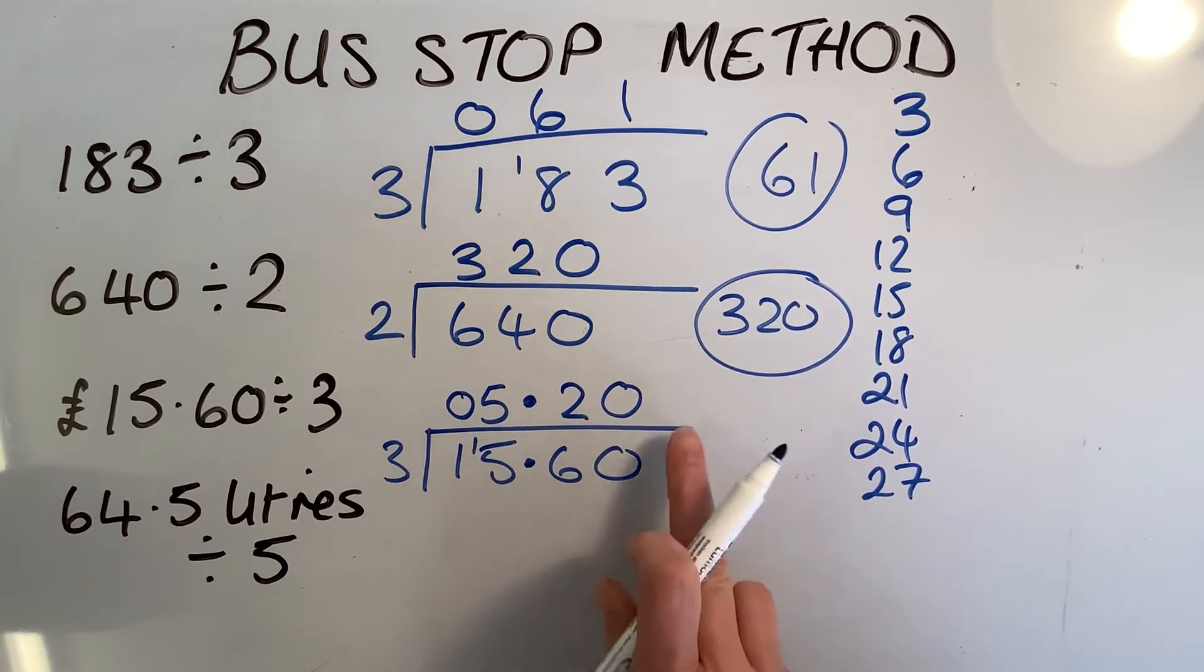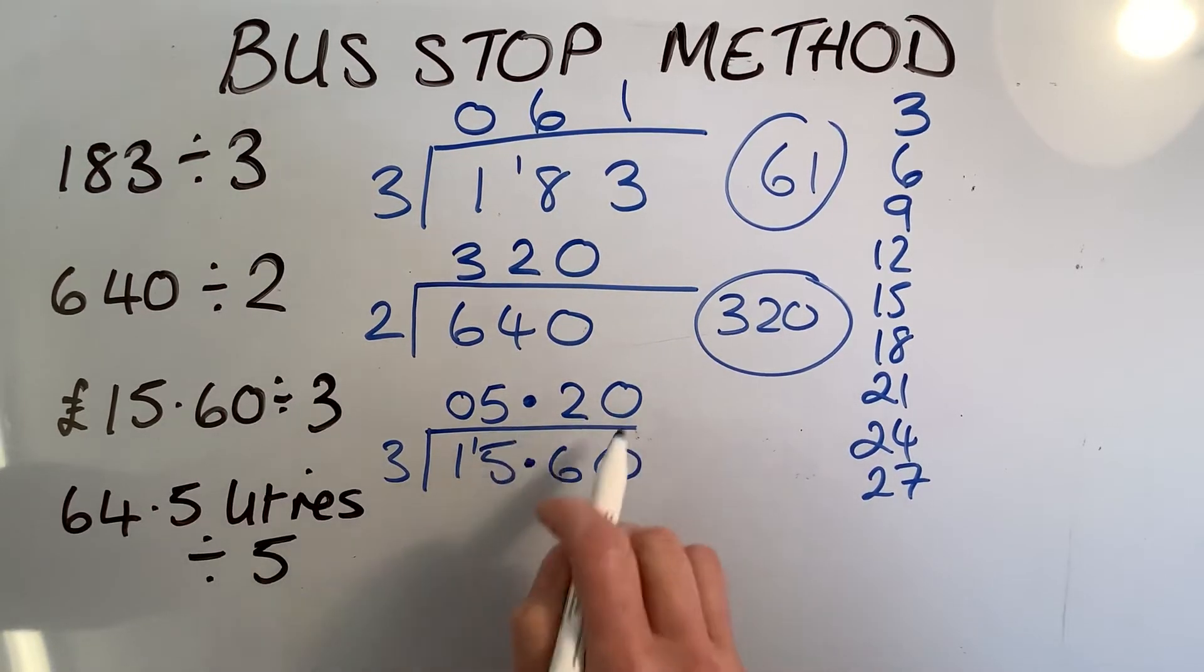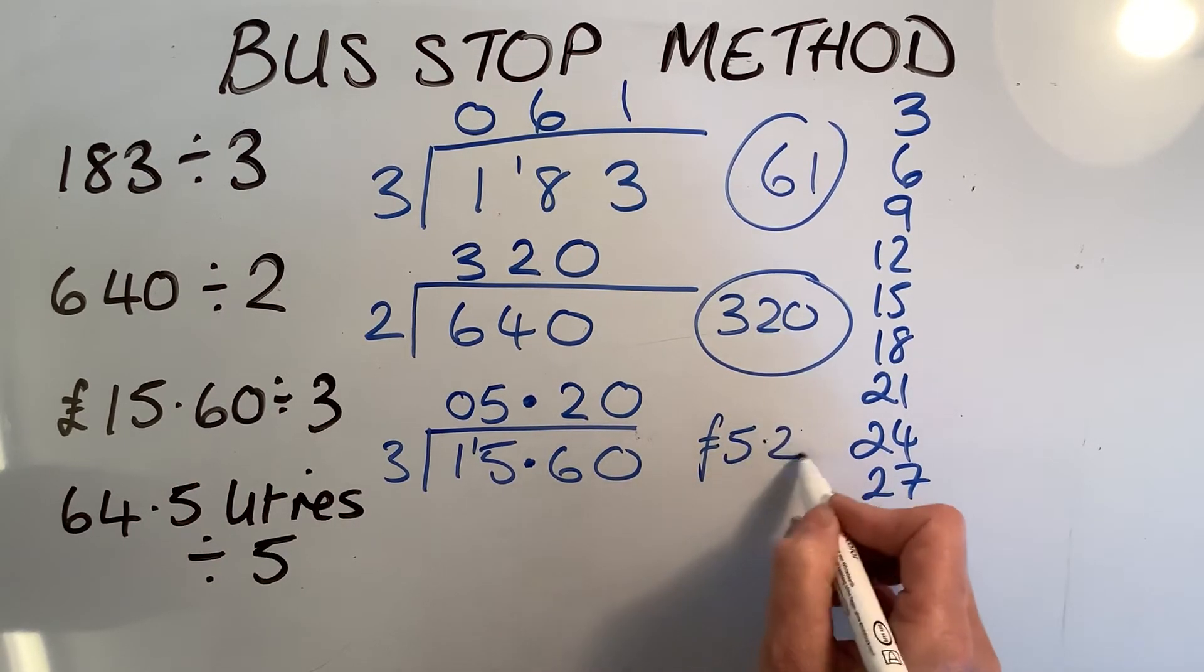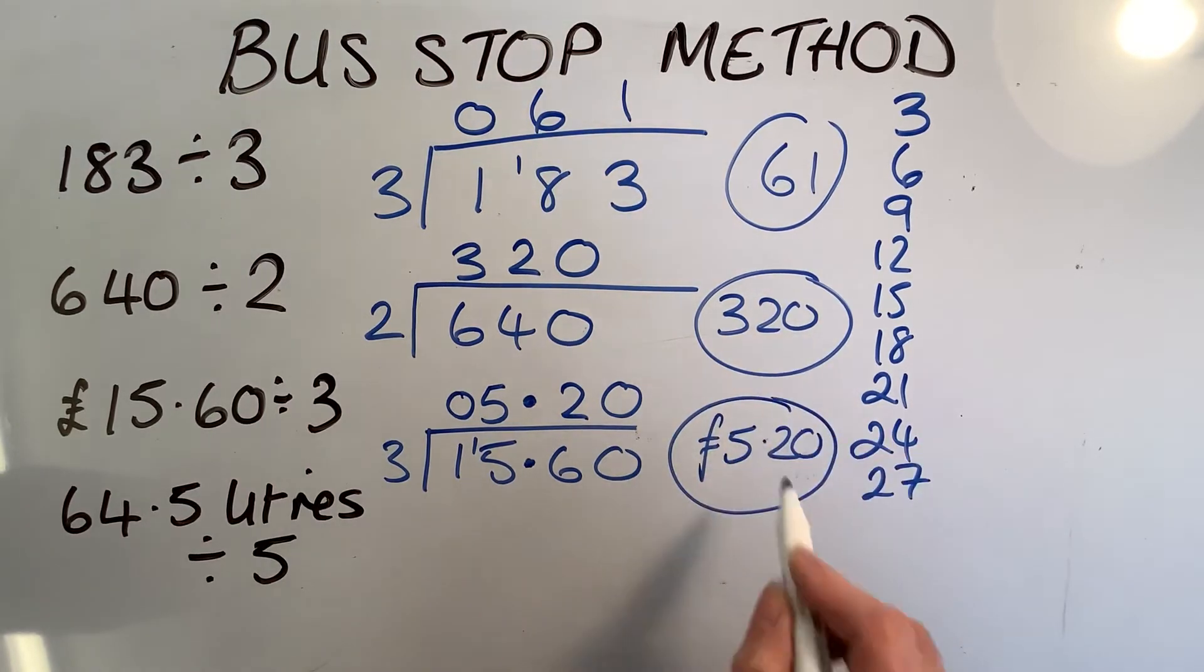So I've got an answer of 5.20. Now, this is a money question, so you'd expect, if you're an examiner, to see it written like that - two numbers after the decimal point and a pound sign. Right, last question.